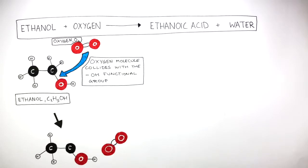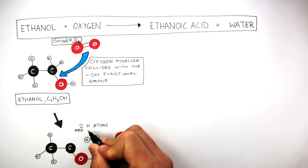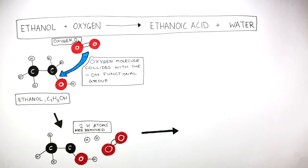The oxygen molecule colliding with the OH functional group causes two hydrogen atoms to be removed. The diagram shows us how one of the oxygen atoms from the oxygen molecule has formed a double covalent bond with a carbon atom.